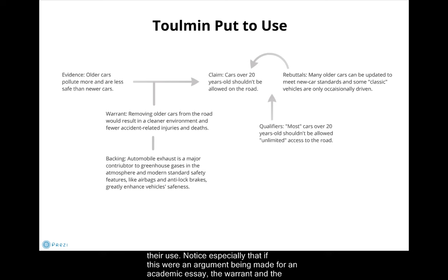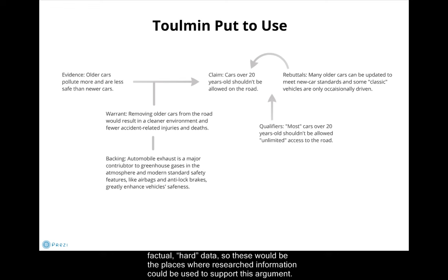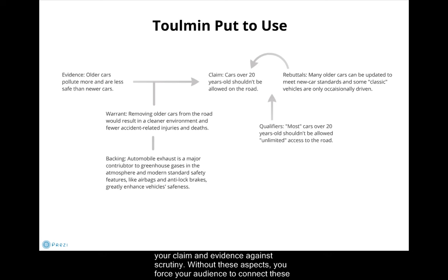Notice especially that if this were an argument being made for an academic essay, the warrant and the backing would be the primary source of discussion because these are the parts of the model that most depend on factual or hard data, so these would be the places where researched information could be used to support this argument. Essentially, these are the aspects of the Tullman model that make your argument for you and hold up your claim and evidence against scrutiny. Without these aspects, you force your audience to connect these dots for you.